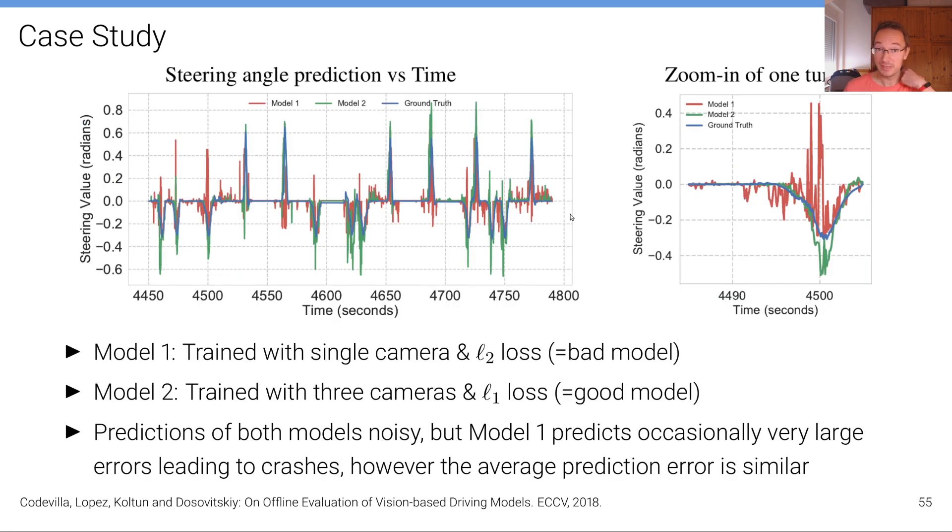In order to understand this better, why the online metrics and the offline metrics are not very well correlated, they also made a case study in this article where they looked at particular maneuvers performed by two models. You can see the ground truth curve is the blue one, and model one is red and model two is green.